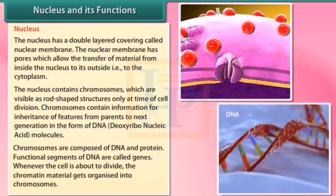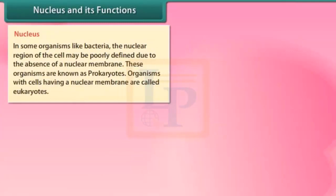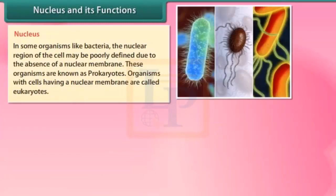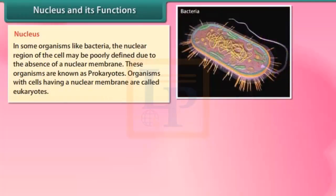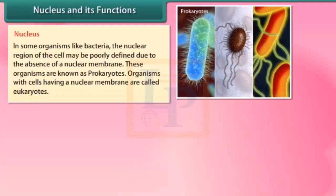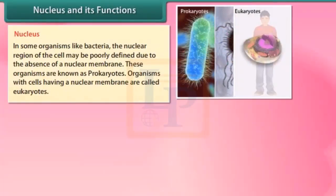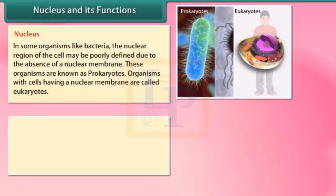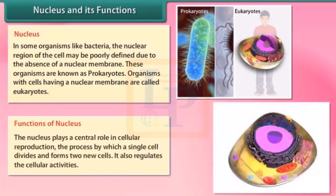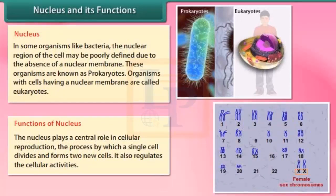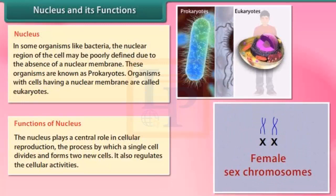Whenever the cell is about to divide, the chromatin material gets organized into chromosomes. In some organisms, like bacteria, the nuclear region of the cell may be poorly defined due to the absence of a nuclear membrane. These organisms are known as prokaryotes. Organisms with cells having a nuclear membrane are called eukaryotes. The nucleus plays a central role in cellular reproduction — the process by which a single cell divides and forms two new cells. It also regulates cellular activities.